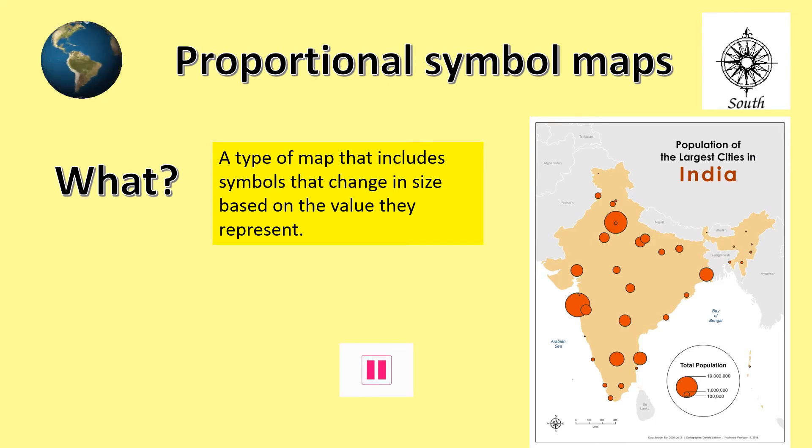The circles represent the largest cities by population in India. By using the key to help us, we can see that there are two mega cities with over 10 million people, including Mumbai on the west coast and Delhi, the capital city towards the north. Pause the show and look at the map and its key to make sure you fully understand what it shows.